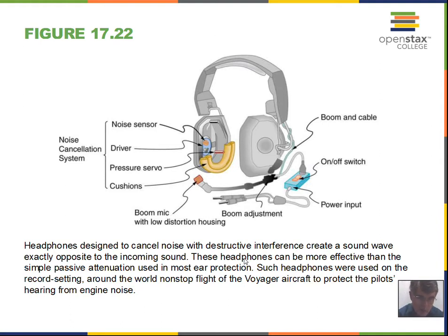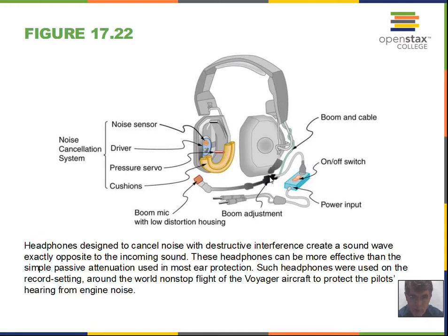Noise-canceling headphones cancel noise from the outside environment. The equipment picks up the room noise and sends it to your ears out of phase by half a wavelength. So if a peak is coming into your ear, the system translates this peak into a valley and sends that to the speakers in the headset. The peak from the room noise and the valley from the processed room noise add together to make zero. We get destructive interference, and the headphones reduce the energy reaching the eardrum.